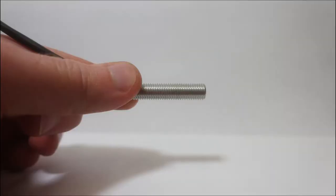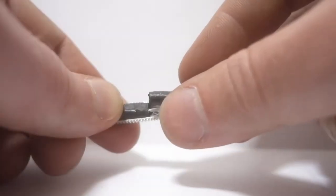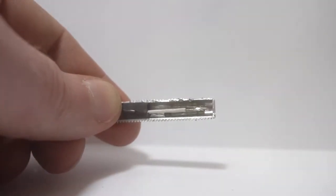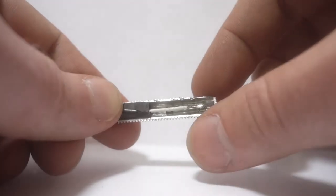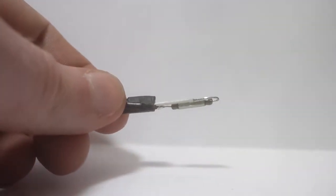The reed switches used on the Bail Bandit have threaded aluminum housing for mounting and protection. The inside of the housing is filled with black epoxy. In the epoxy is a sealed glass tube with two overlapping pieces of metal in it. The ends of these pieces of metal are separated by a tiny gap.